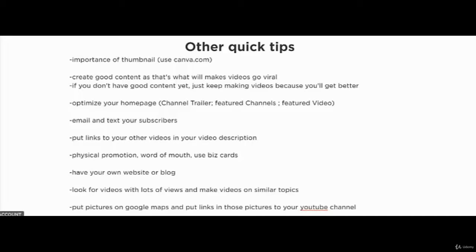Creating good content is what will ultimately make your videos go viral. If you don't have good content yet, don't worry — just keep making videos and be persistent, because eventually you'll get better. Even top YouTubers making six or seven figures had content that wasn't great when they first started. Also make sure to optimize your homepage, your channel trailer, and your future videos.